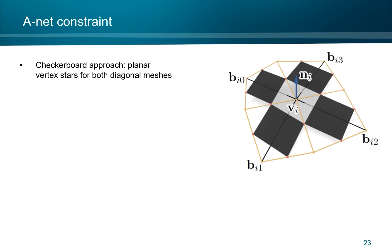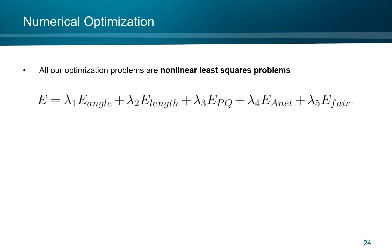A discrete model is given by quad meshes with planar vertex stars, meaning that the four edges that emanate from a vertex lie in a common plane. In the checkerboard approach, we make sure that both diagonal meshes have planar vertex stars. And we express this, of course, with normals as auxiliary variables, very much as before for the planar quad meshes. So finally, we arrive at a nonlinear least squares problem, where the objective function is composed of various terms. The first one takes care of the angle measurements, the second of length in diagonals, the third is the term for planar quads, the fourth for the a-nets, and the fifth deals with fairness, which I didn't discuss here, but we refer to the paper. Please note that we will never optimize for planar quads and planar vertex stars at the same time, so either lambda 3 or lambda 4 will be zero here. We use a Levenberg-Marquardt algorithm for numerical solution.